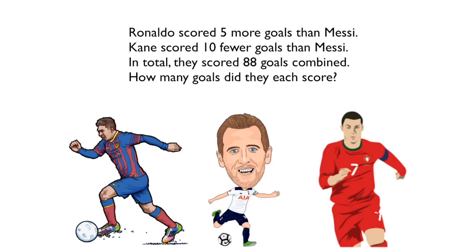First up is a problem involving three of my favorite footballers: Ronaldo, Kane and Messi. Ronaldo scored five more goals than Messi last season. Kane scored 10 fewer goals than Messi, and in total they scored 88 goals combined. The question is: how many goals did they each score?